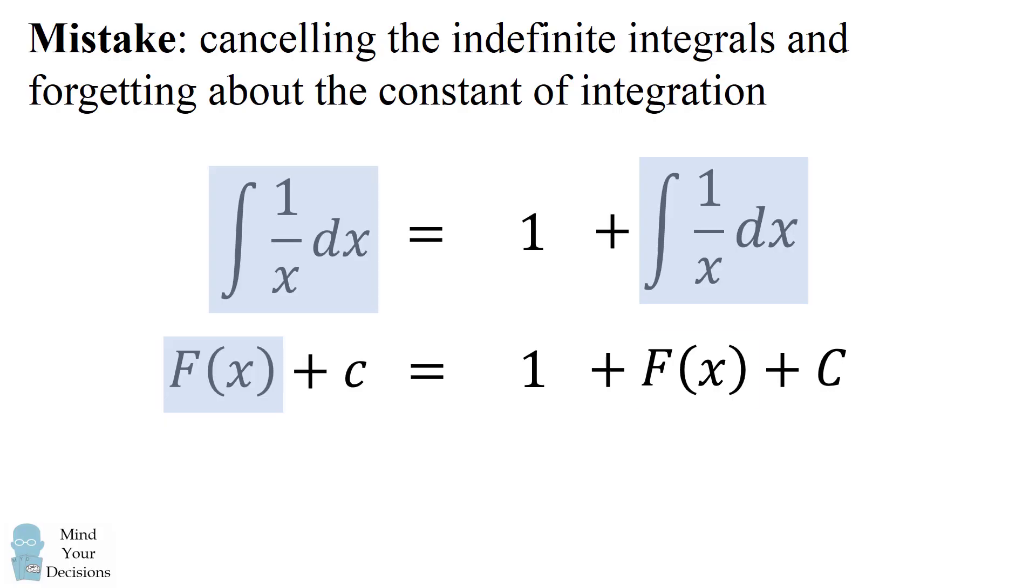So we can cancel out these antiderivatives, but then we end up with the equation that lowercase c is equal to 1 plus uppercase C. So we haven't proven that 0 is equal to 1. We've actually proven that the constant of integrations will differ by 1. In other words, 0 is equal to 1 up to a constant of integration. So that's the mistake in the proof is canceling out these indefinite integrals.